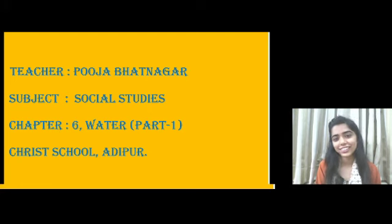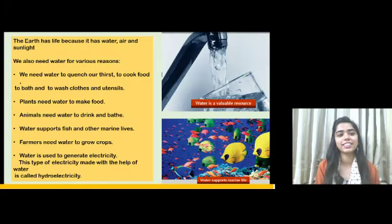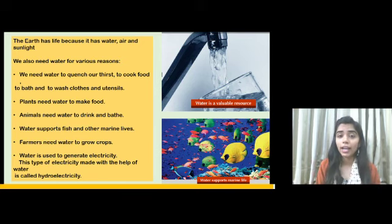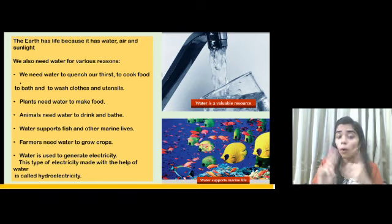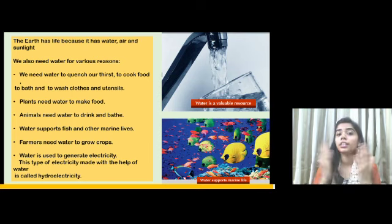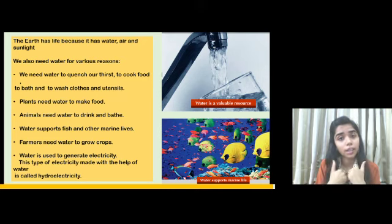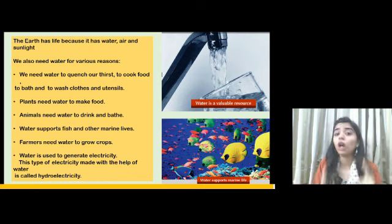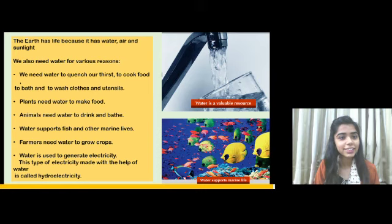The earth has life because it has water, air, and sunlight. Without air, water, and sunlight, living beings like human beings and animals cannot survive. We need water for many reasons.